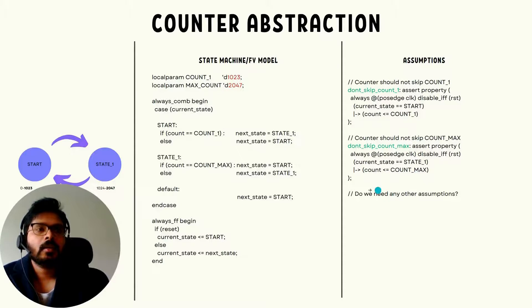So these two assumptions are sufficient to implement a very simple counter abstraction, but you need to implement it and see if you're missing some case which you didn't want to miss in the abstraction. This is to give you a general idea. In a nutshell, these two assumptions along with this abstraction make sure that you have a simple counter which can toggle between start and state one. And then it can take any combination of values, but not excluding 1023 and 2047, which are the interesting values for the property that you're verifying.